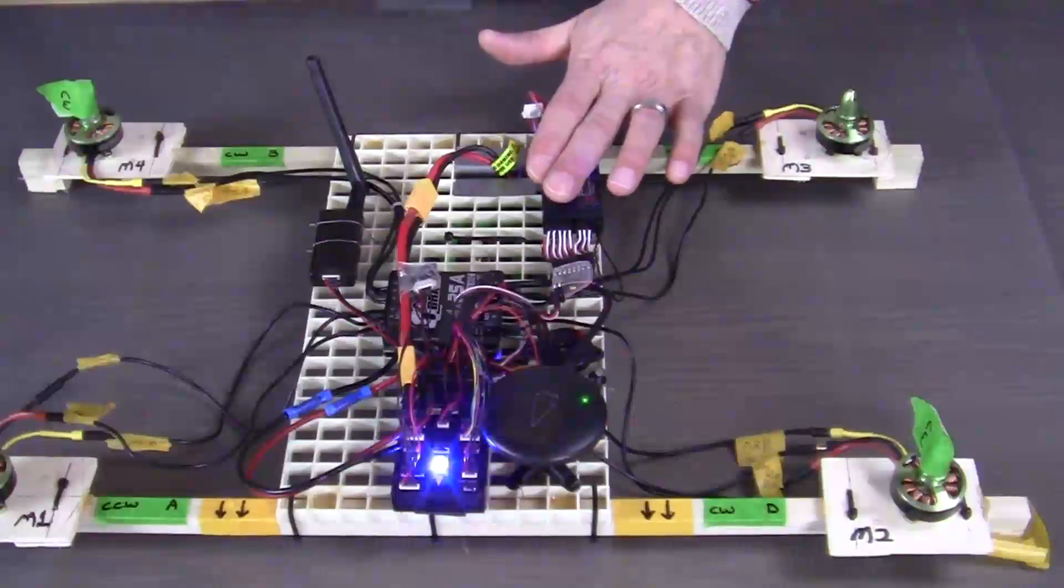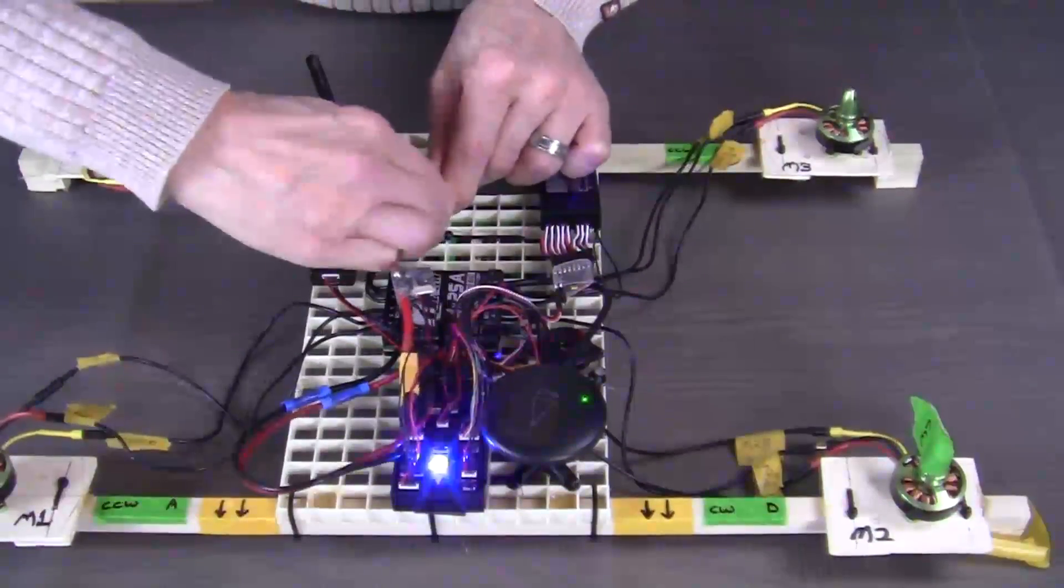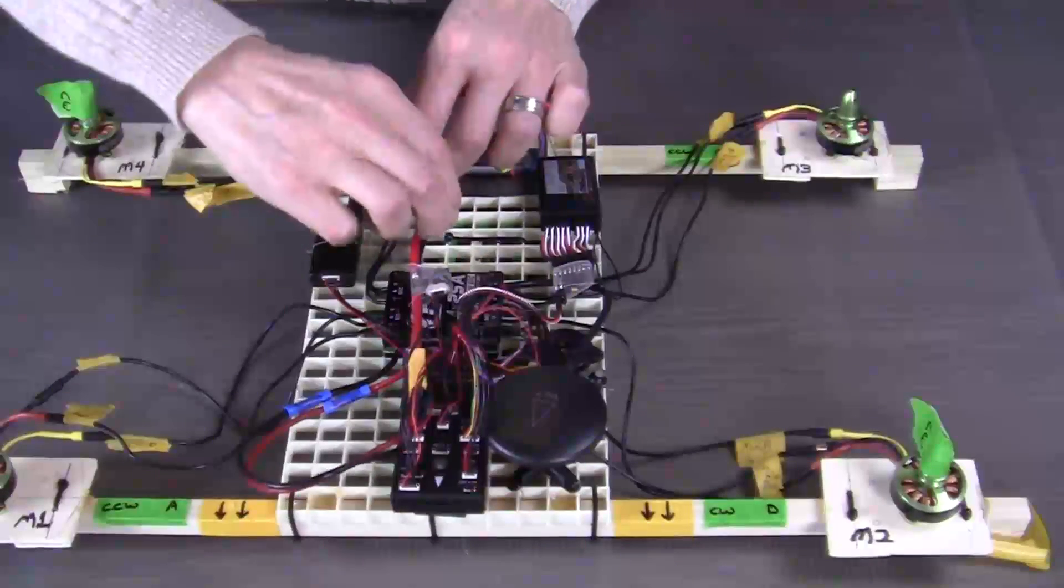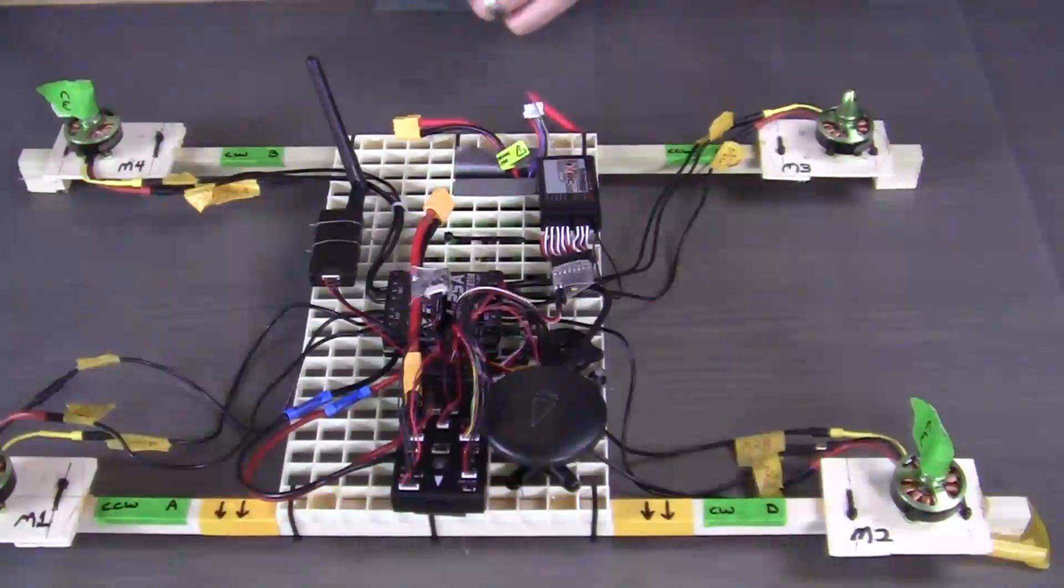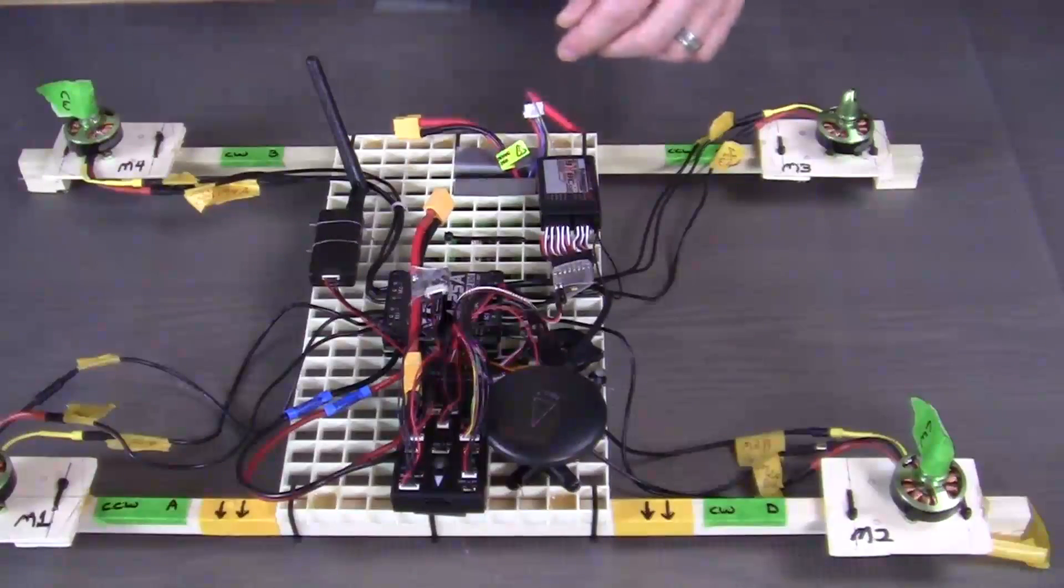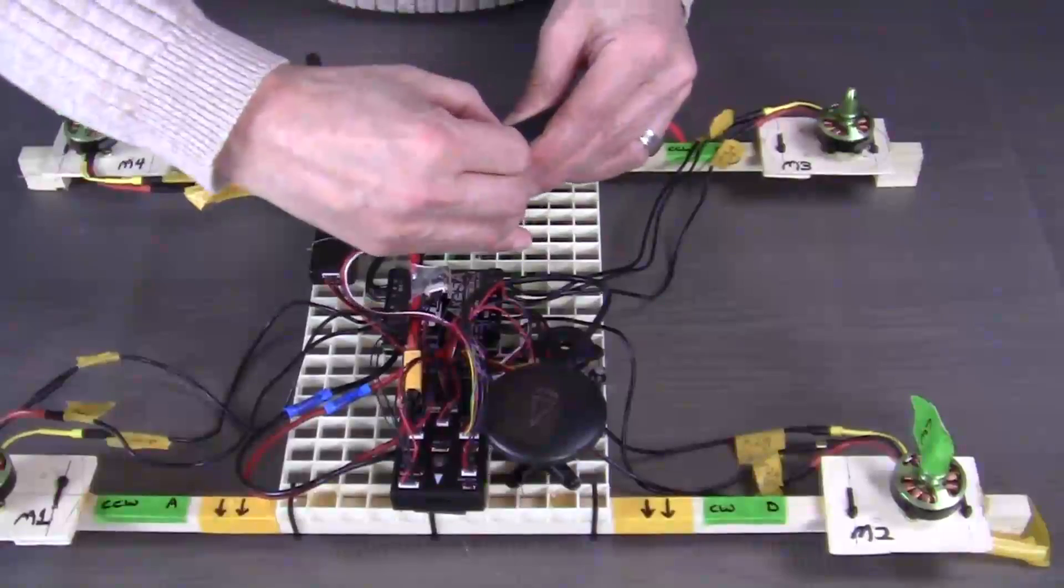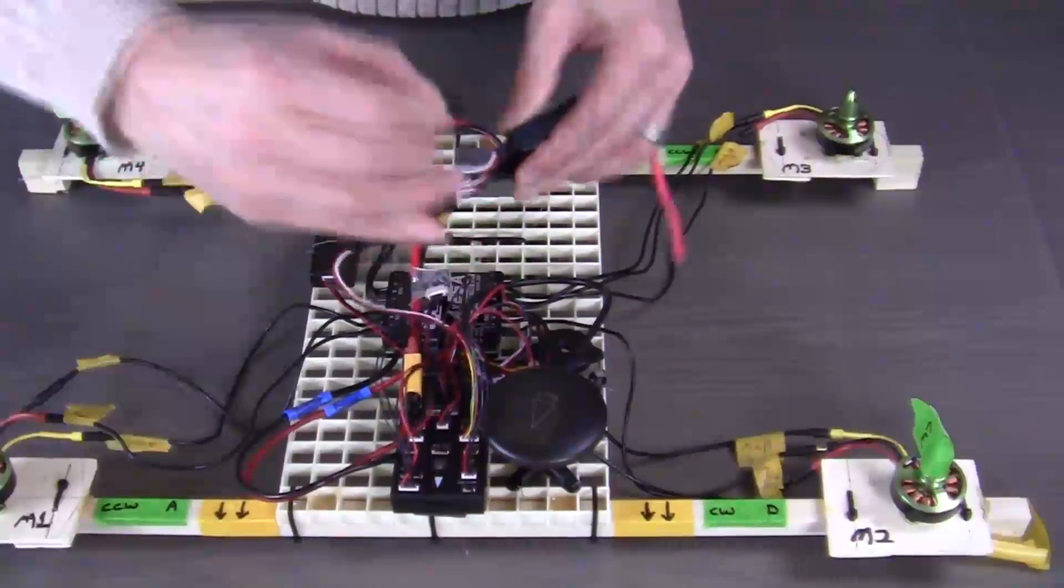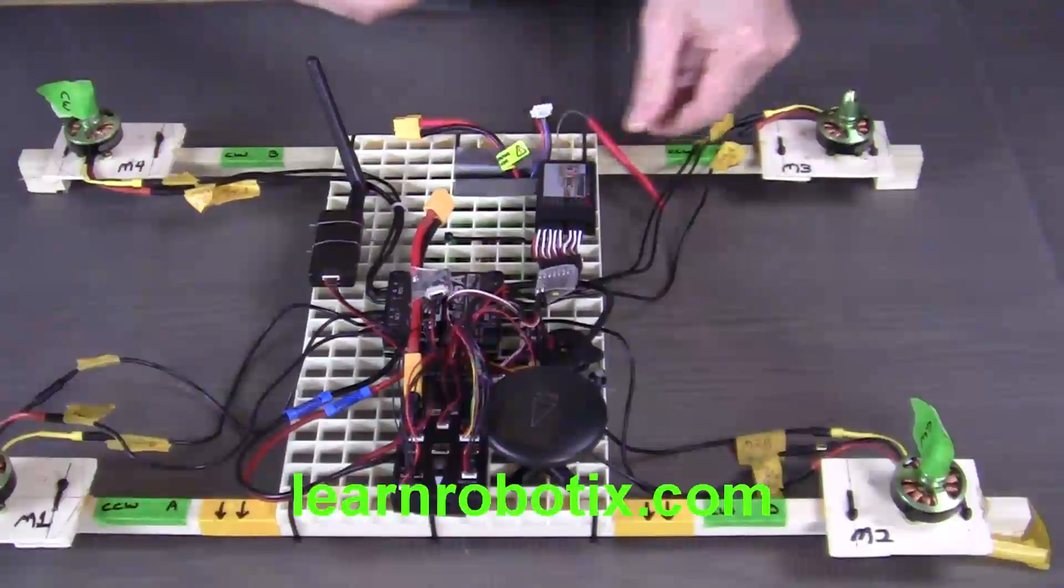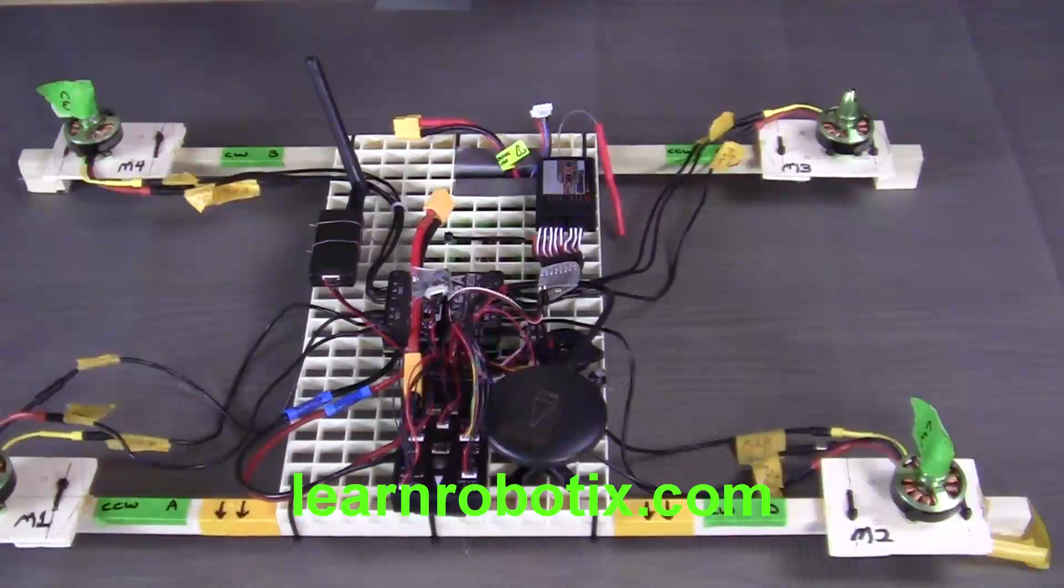Now that the two are bound together, let's go ahead and disconnect the power from the system. Make sure that the transmitter is turned off, and then disconnect the bind wire from the receiver. Now this step in the process is complete.